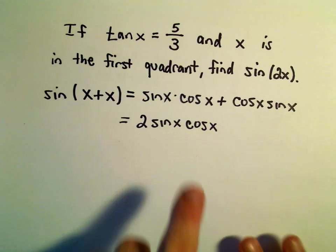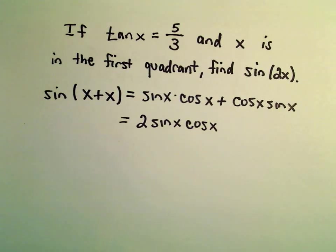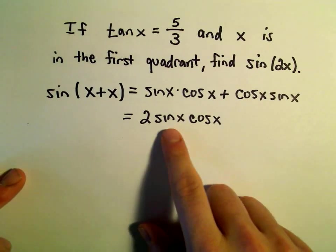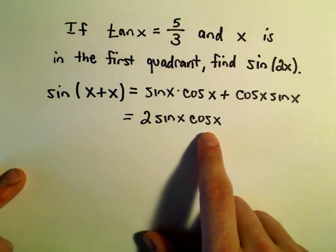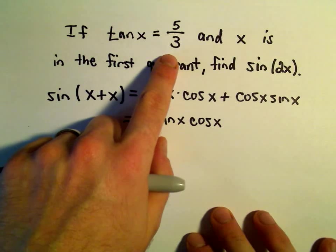And again, this is definitely an important identity, use it quite a bit. Okay, well we still have to figure out values for sine and values for cosine. We're given that tangent is 5 thirds.